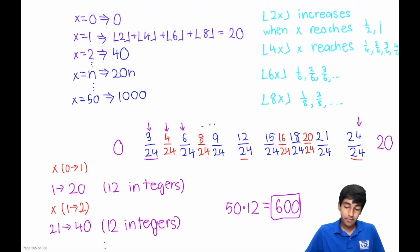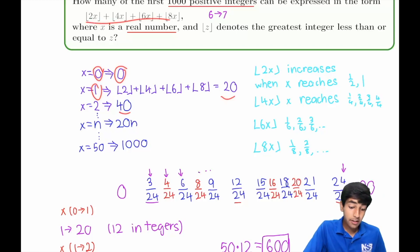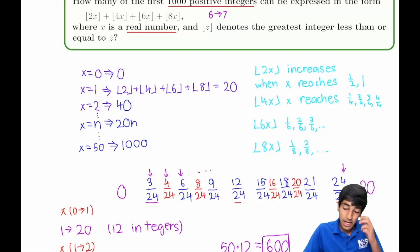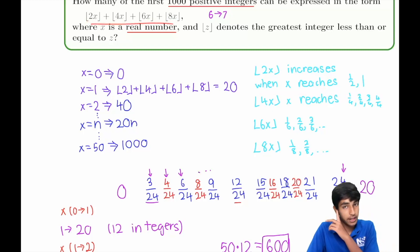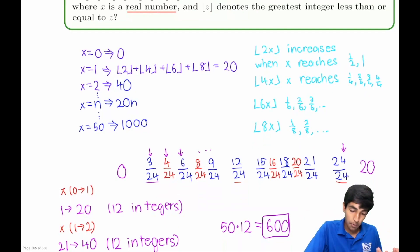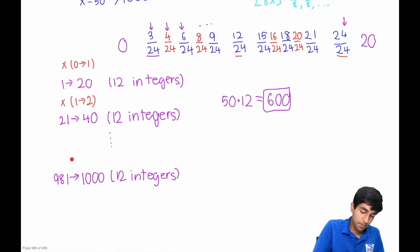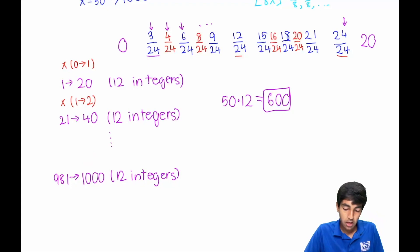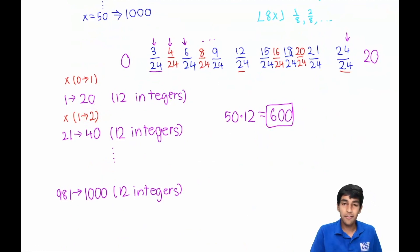This was a great problem. The key trick was first spotting the pattern for integer x values, then recognizing x is real and examining the fractional behavior. The insight was identifying when each floor term increases — those 12 milestones per unit interval — and noting the symmetry that scales across every interval of length 1, giving 600 total valid values.